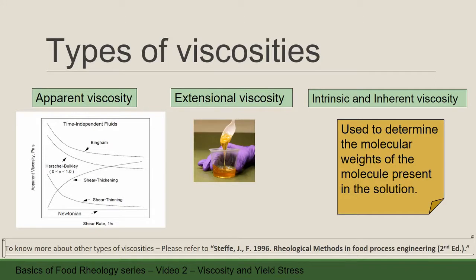How about intrinsic and inherent viscosity? Both of them are used to determine the molecular weights of the molecules present in the solution. In intrinsic viscosity, concentration of solute approaches zero, meaning if we change the concentration of solute, there is no change in intrinsic viscosity. Whereas inherent viscosity tells us how much polymer is contributing to the solution viscosity, and it depends upon the concentration. So they explain the rheological properties of polymers.